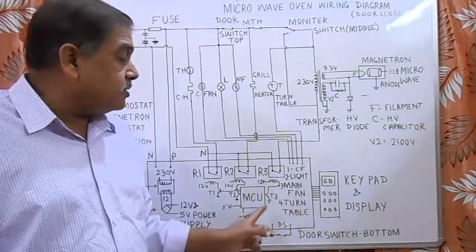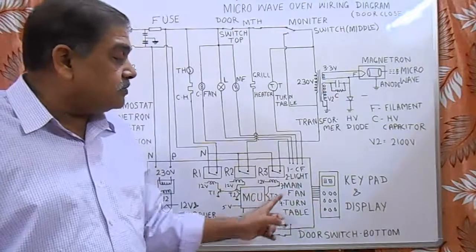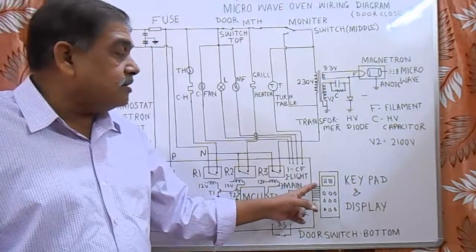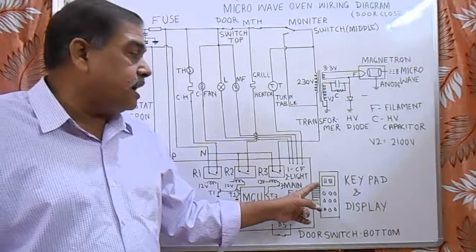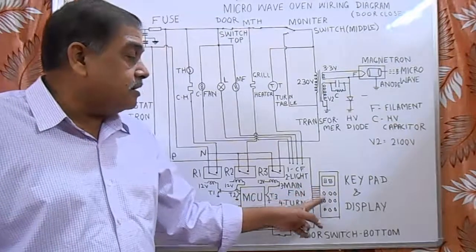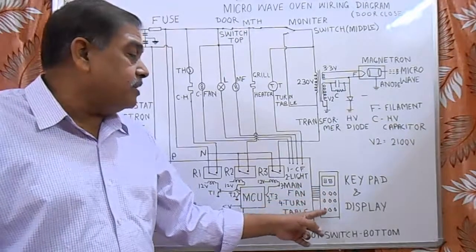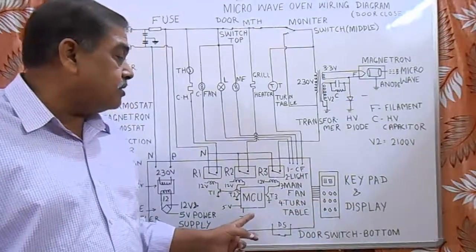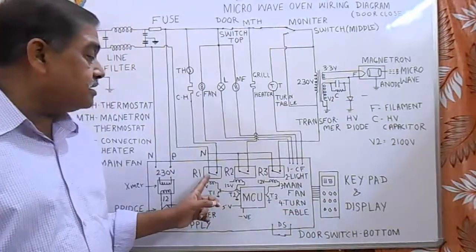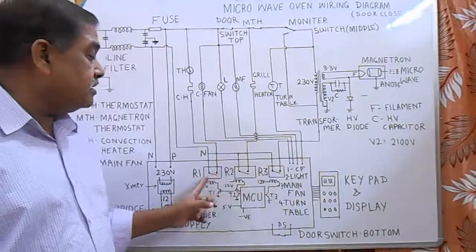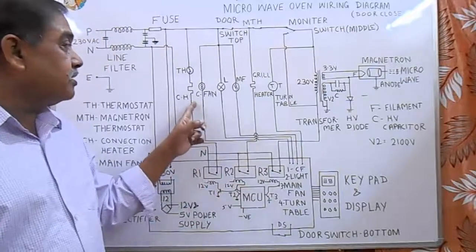The microcontrol unit is connected to the keypad and display system. It displays variables like time and temperature. The keypad is used for giving input data to the microcontrol. There are three relays: R1, R2, and R3. R1 controls the convection heater.